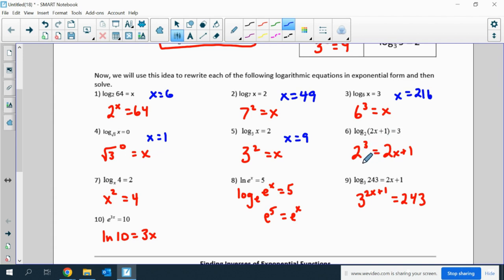2 cubed is 8. So we have 8 equals 2x plus 1, so x equals 7 halves. x squared equals 4 means x equals plus or minus 2. But we also have to be careful, because the base of a log cannot be negative. So the answer is actually only x equals positive 2.